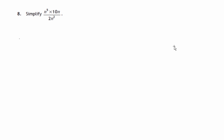This is question 8 from paper 2 of the 2014 National 5 Maths exam. We're asked to simplify this expression: n to the power 5 times 10n divided by 2n squared.